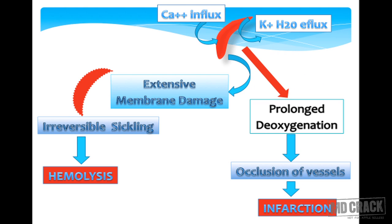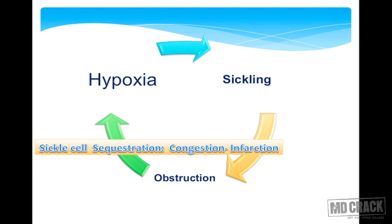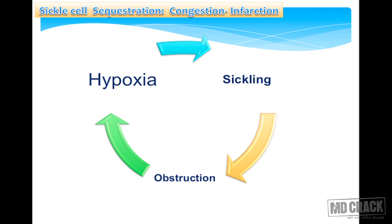As deoxygenation continues, sickled RBCs keep occluding vessels of various organs, and those organs undergo infarctive changes. This is the pathophysiology and pathogenesis of sickle cell anemia. It is a vicious cycle of sickling: more sickling leads to more vascular occlusion, more hypoxia, and more sickling — a vicious cycle of sickling, hypoxia, and obstruction resulting in continuing ischemia.